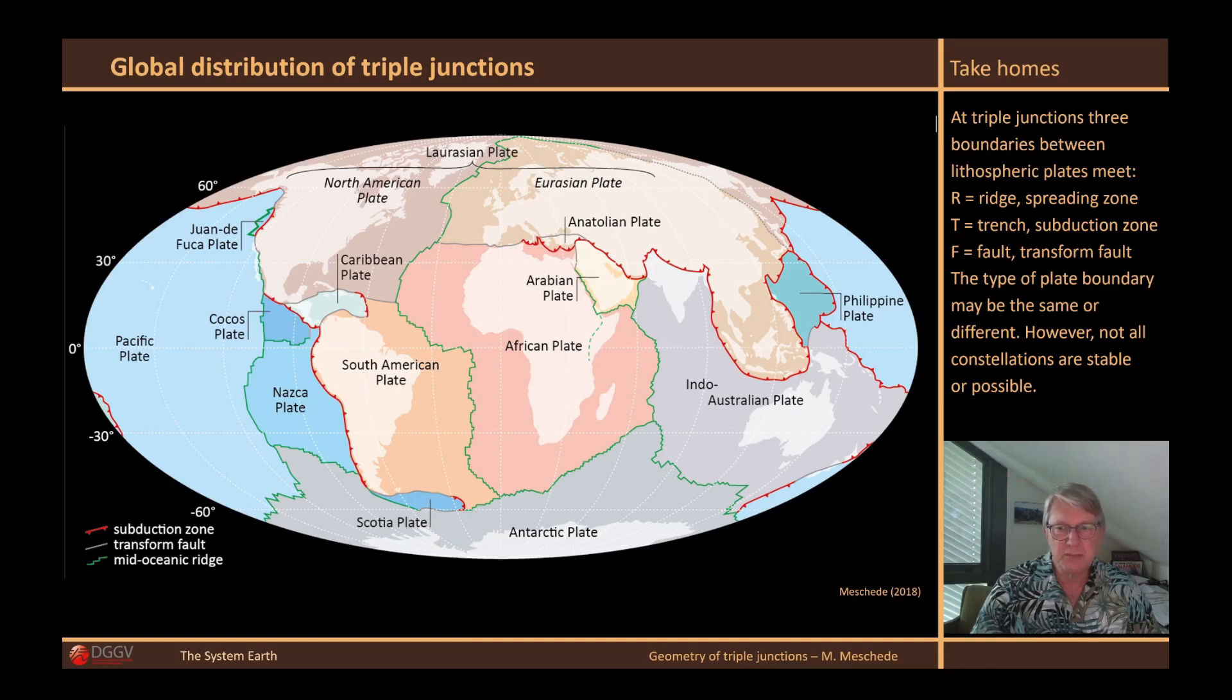An inevitable consequence of this large number of plates is that there are a lot of triple junctions where three plate boundaries meet.